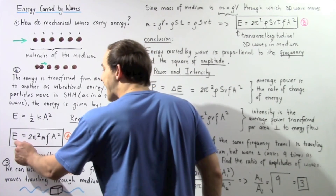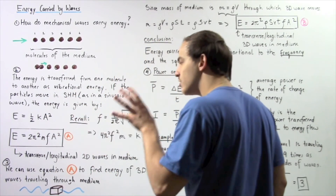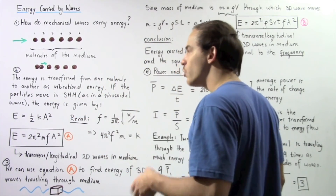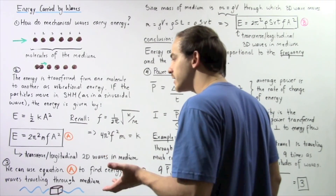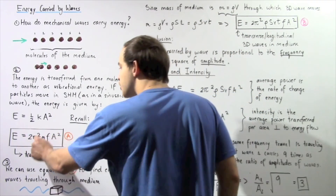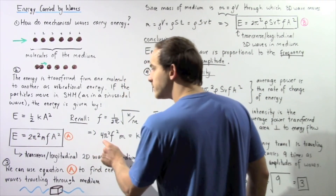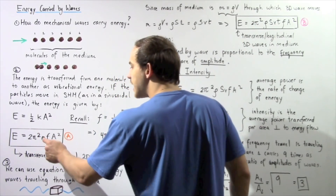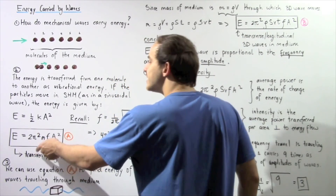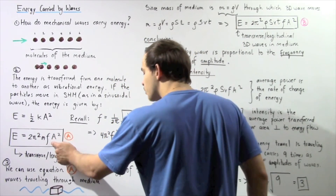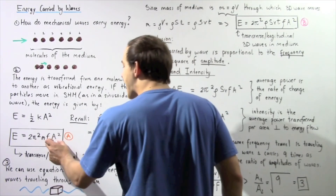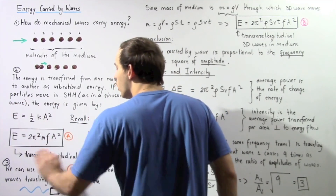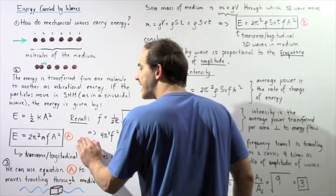The energy of the propagating wave equals 2π² — because 4 divided by 2 is 2 — times π² times mass times frequency squared times amplitude squared. Let's call this equation A.